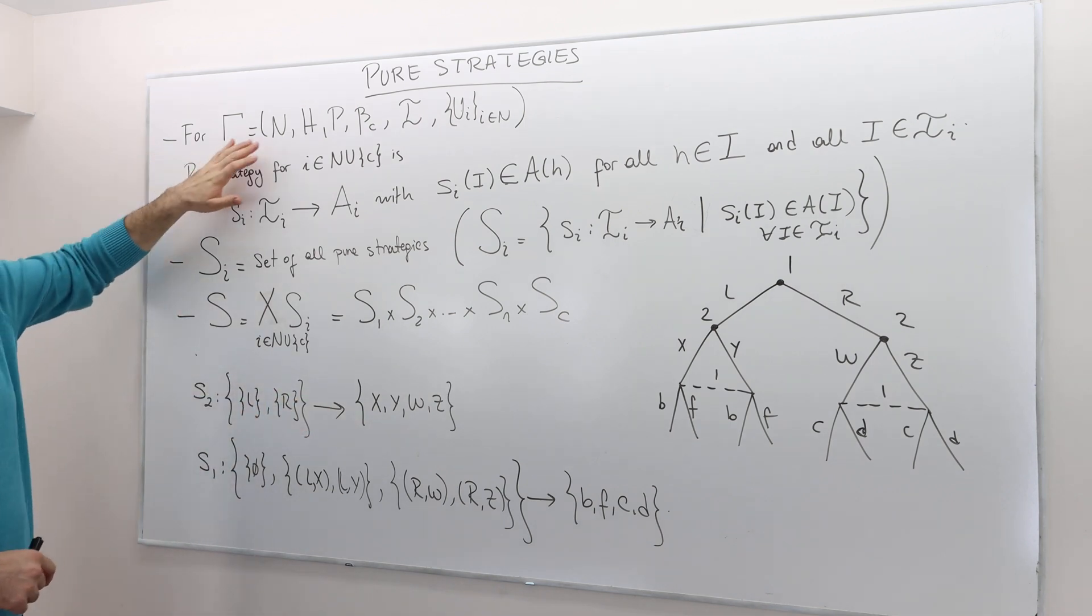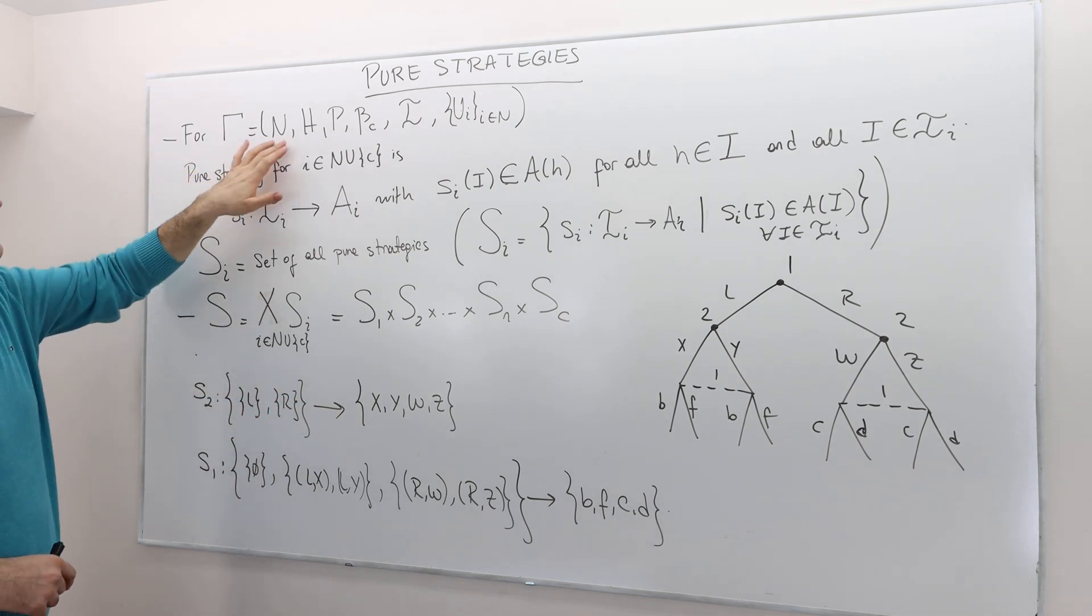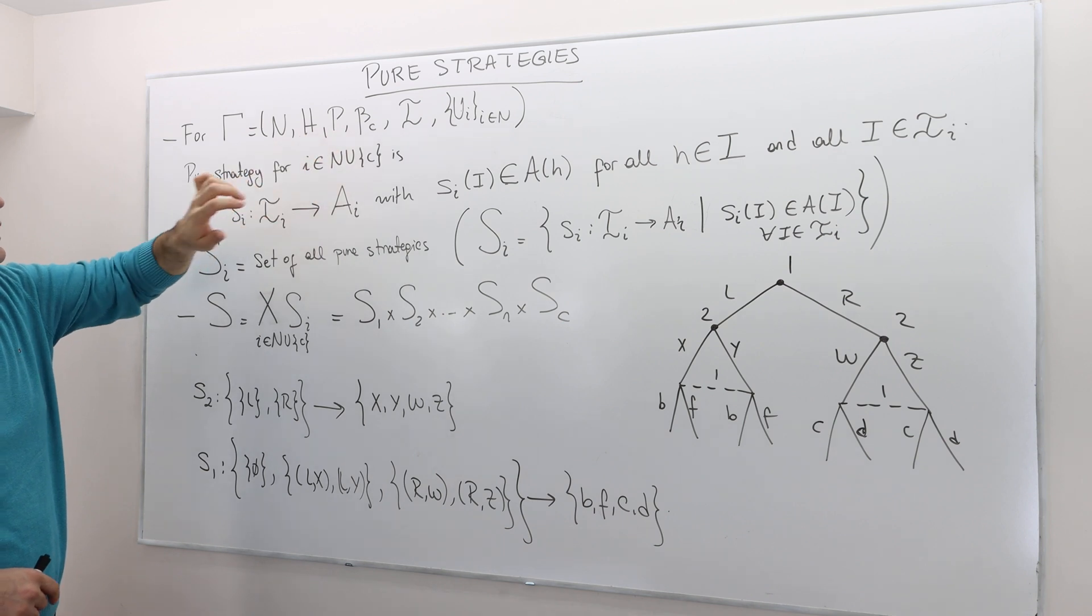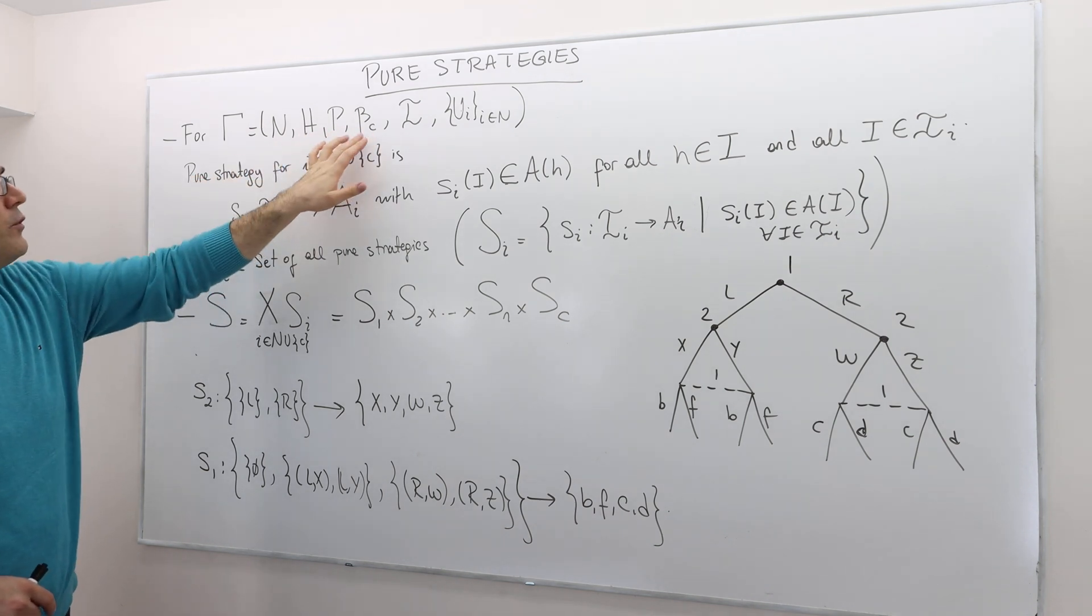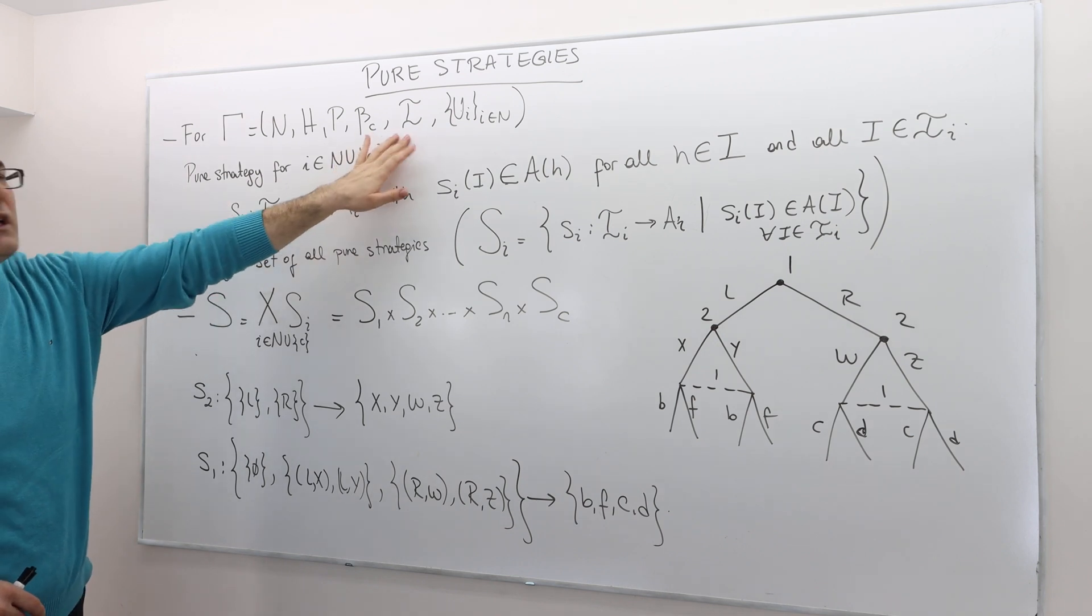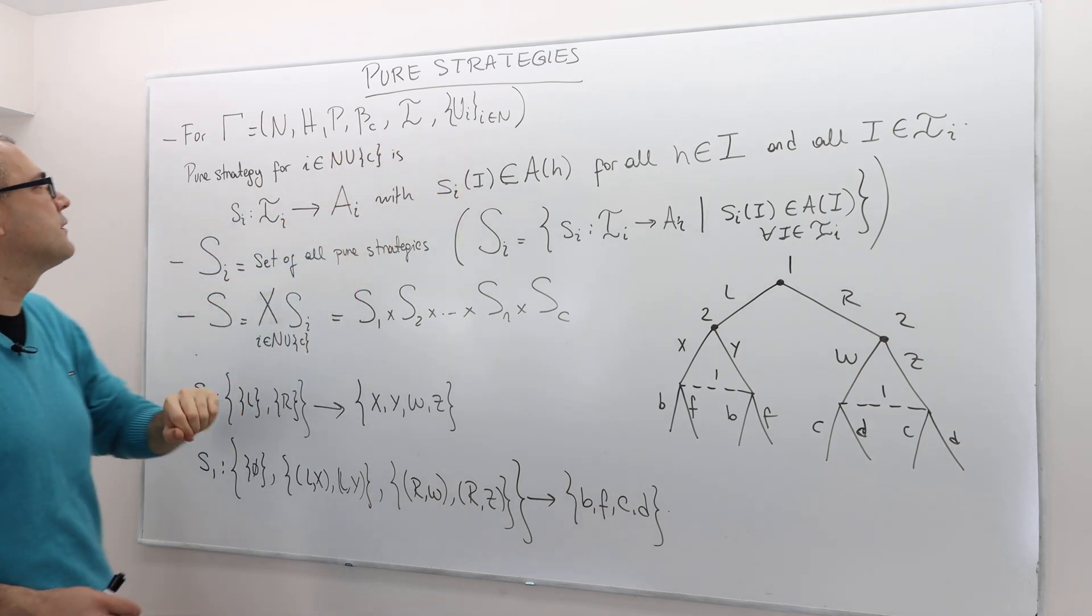So for any given extensive form game with set of players, histories, player function, if nature moves, nature's probability distribution, the information set, and the payoffs...